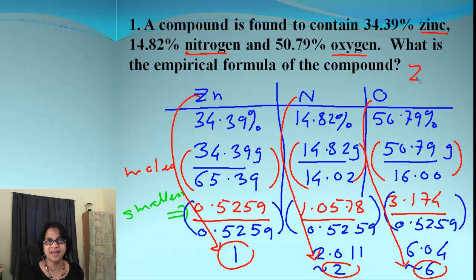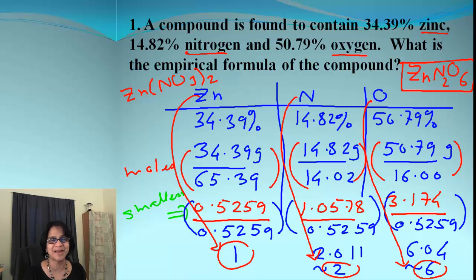So we have zinc 1, nitrogen is 2 and we get oxygen at 6. So what is the formula? It is Zn N2O6. Or if you know this is nothing but simply Zn(NO3)2. Alright. Let's move to the next problem now.